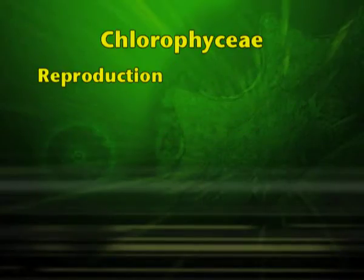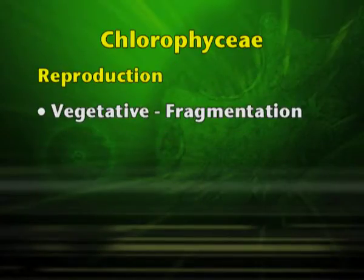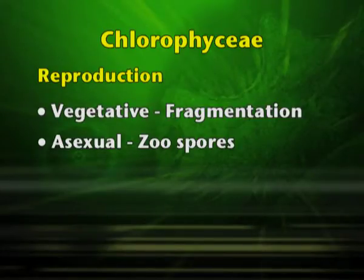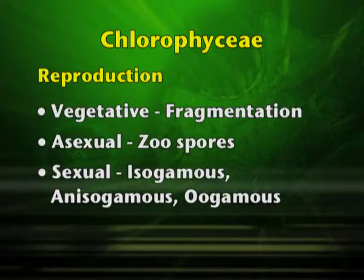Reproduction in Chlorophyceae may be by vegetative means, that is by fragmentation; by asexual means, it may be by zoospores; and sexual reproduction may be isogamous, anisogamous or oogamous.